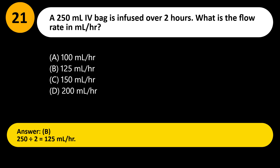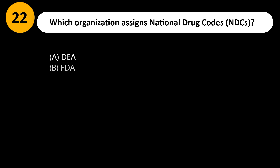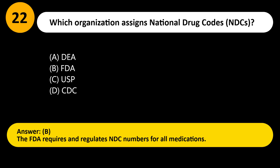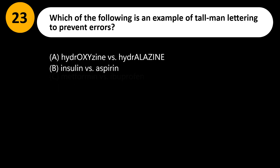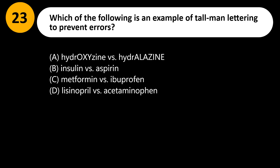Which organization assigns National Drug Codes (NDCs)? A) DEA, B) FDA, C) USP, D) CDC. Answer: B. The FDA requires and regulates NDC numbers for all medications.